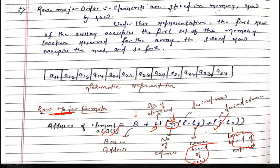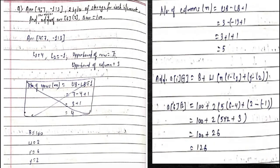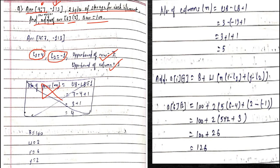Here is an example. There is an array with rows from 4 to 7 and columns from -1 to 3. Two bytes of storage is used for each element. Find the row-major address of element a[6][2], where the base address is 100. The lower bound of row is 4, the lower bound of column is -1, the upper bound of row is 7, and the upper bound of column is 3.